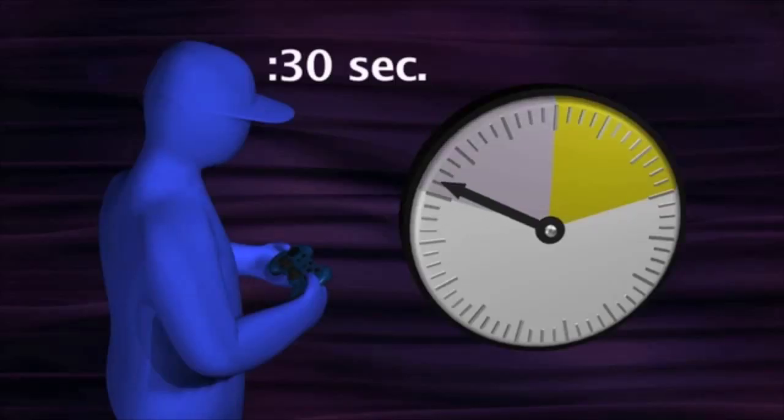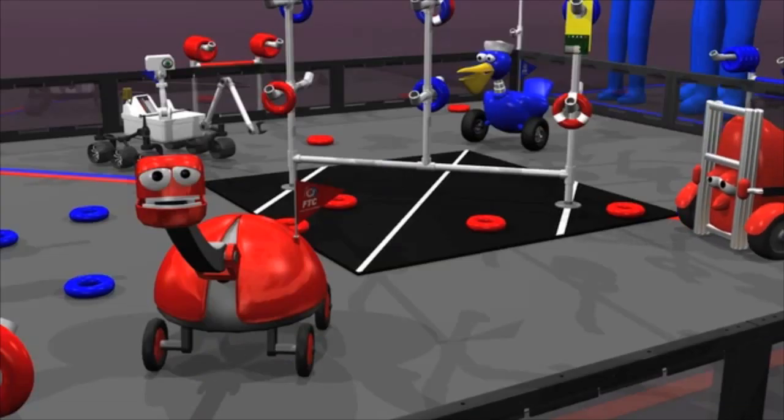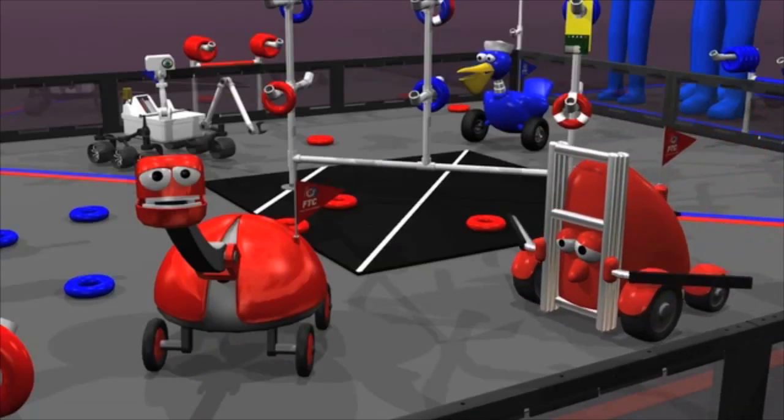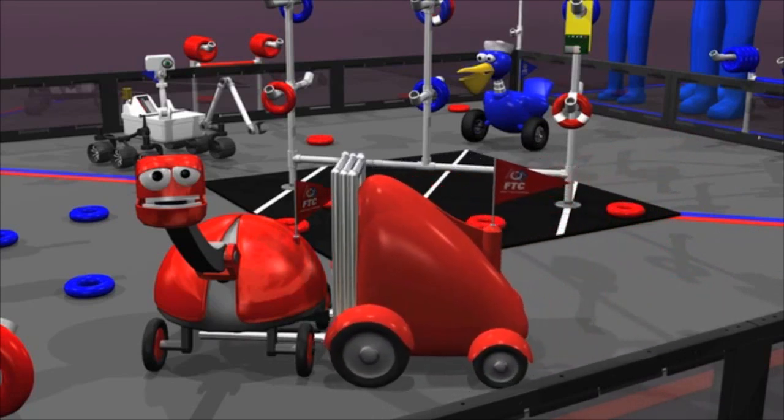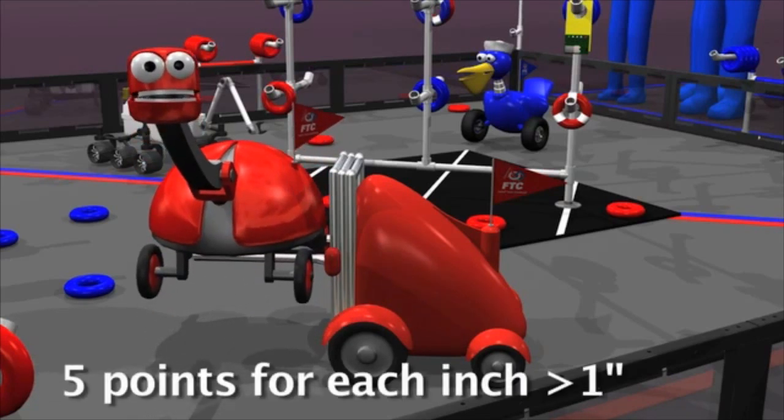The last 30 seconds of the driver-controlled period is the end game. During this time, if a robot can lift an alliance partner robot at least one inch off the floor, they are awarded a 30-point lifting bonus. And the alliance earns five more bonus points for each additional inch the robot is lifted.